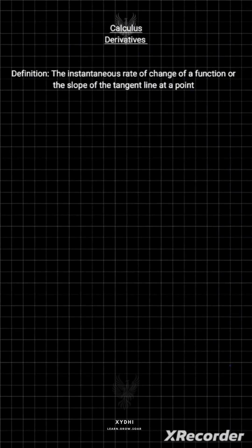Today we'll start with derivatives. Derivatives are the instantaneous rate of change of a function, or the slope of a tangent line at a point.